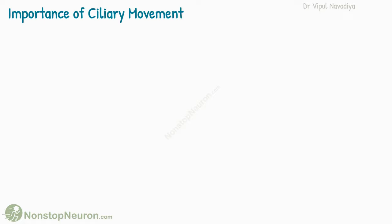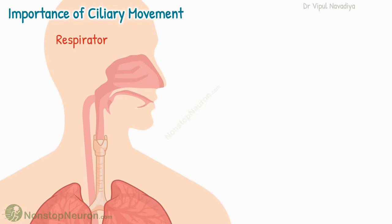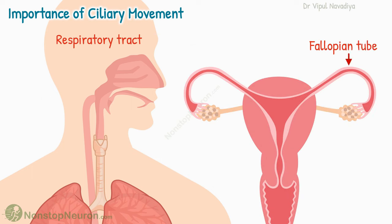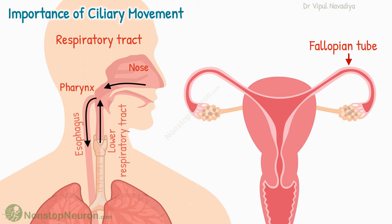Ciliary movement is mainly seen at two places: the respiratory tract, and the fallopian tube. In the nose and lower respiratory tract, ciliary movement at epithelial cells moves the mucus toward the pharynx, from where it is swallowed into the esophagus. Foreign bodies or pathogens that enter the respiratory tract during inspiration are cleared this way, and in the gastrointestinal tract they are taken care of by gastric juice. In the fallopian tube, the ciliary movement of epithelial cells moves the ovum from the ovary to the uterus.